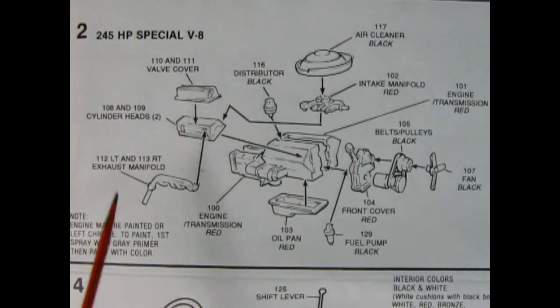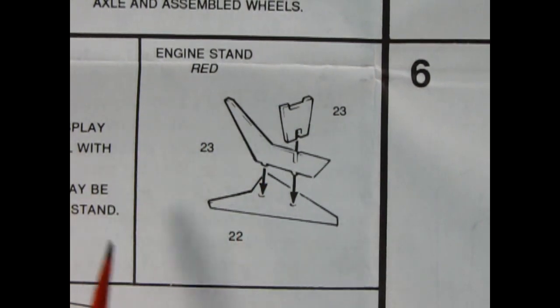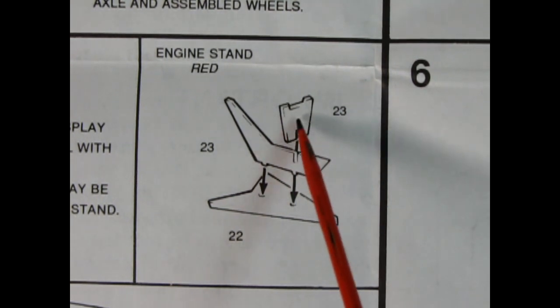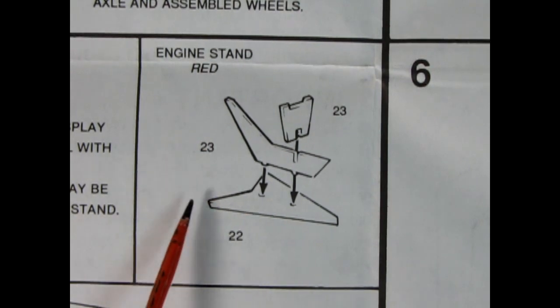Down here we have the engine stand, a nice little three piece. It's got the little brace in the front for the oil pan and then a little point at the back which the transmission would rest on, and then this nice arrow-shaped base.